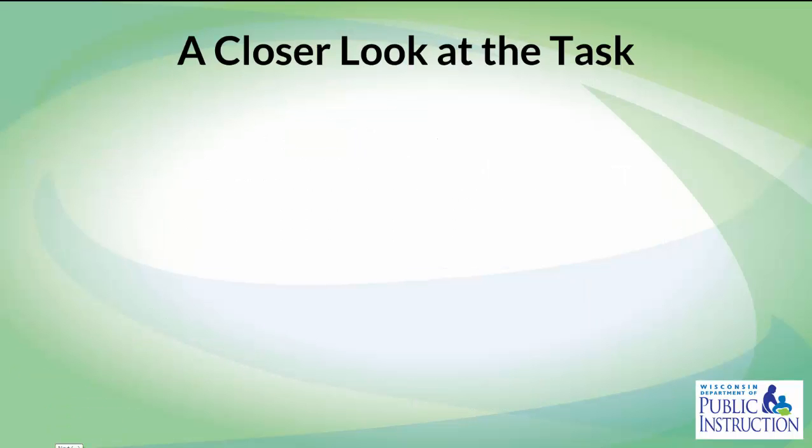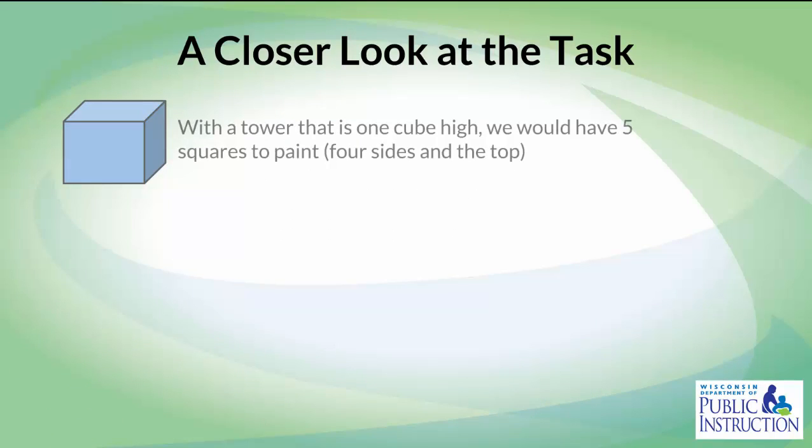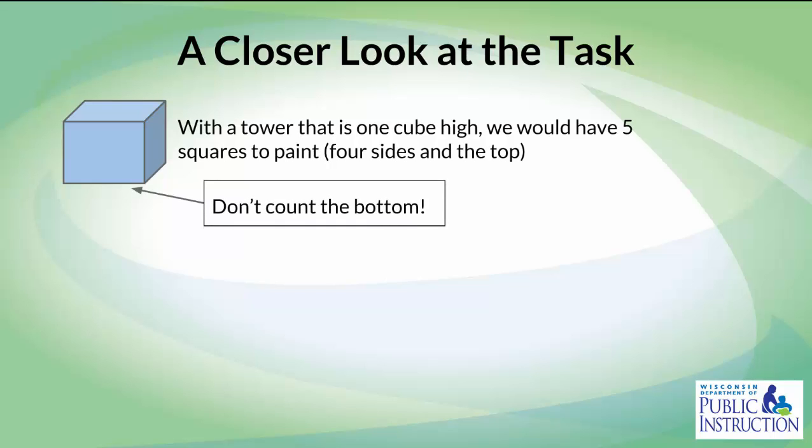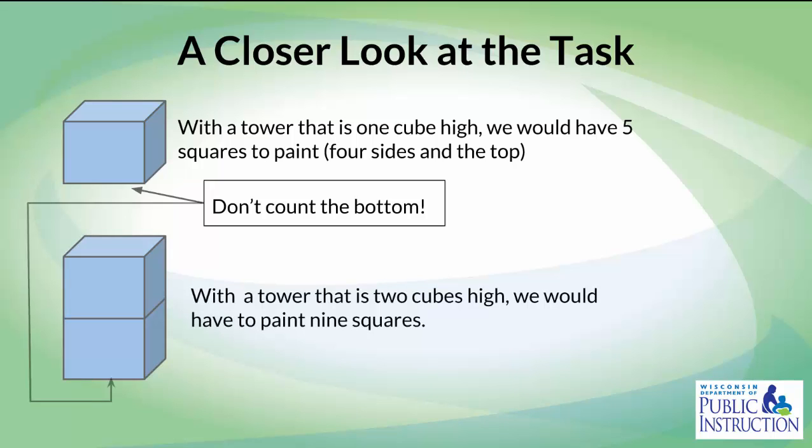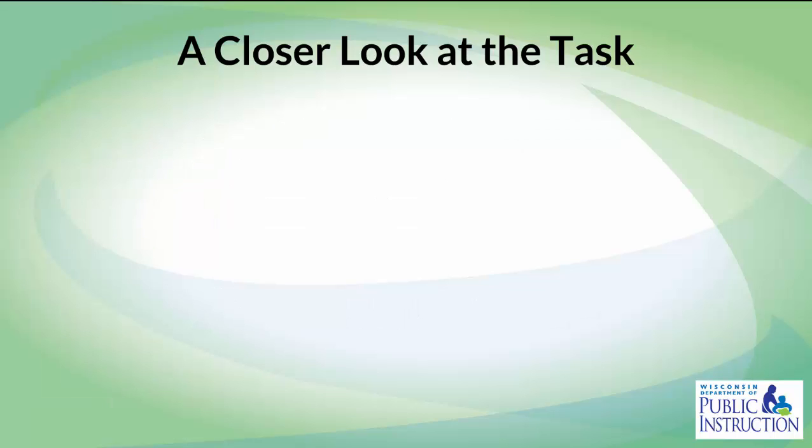Let's take a closer look at this task. With a tower that is one cube high, we would have to paint five squares. That includes the four sides and the top. Remember, we are not counting the bottom. With a tower that is two cubes high, we would have to paint a total of nine squares. Eight around the sides and one on the top.